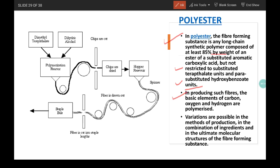In producing such fibers, the basic elements of carbon, oxygen, and hydrogen are polymerized. Variations are possible in the methods of production, in the combination of ingredients, and in the ultimate molecular structure of the fiber-forming substances. Here you can take a look at the manufacturing process of polyester.